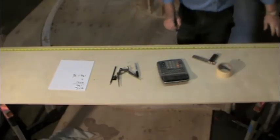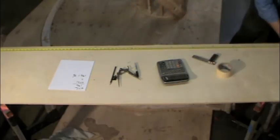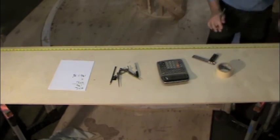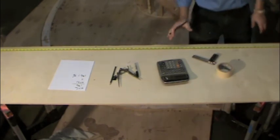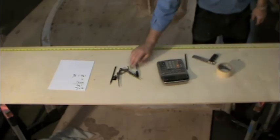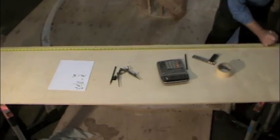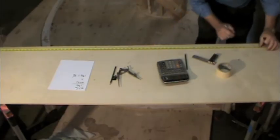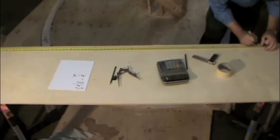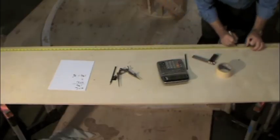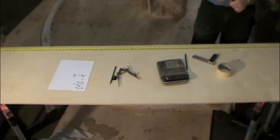Now our first measurement is going to be four and a half. And if we hit equals again, not plus equals this time, but just equals, we're going to get all of our center line layouts all the way down the line. So we're at nine and seven-eighths, 15 and five-sixteenths, 20 and 11 sixteenths, and so on down the line.